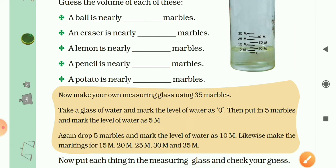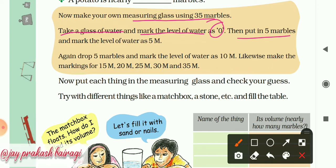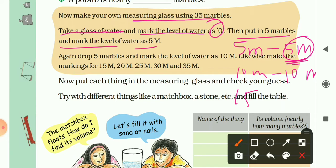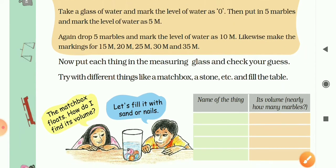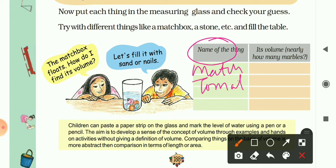A potato is about ten marbles - these are just guesses, answers may vary. Now make your own measuring glass using 35 marbles: take a glass of water and mark the level as zero, then put in five marbles and mark the level as '5m'. Similarly, mark levels at 10, 15, 20, 30, and 35 marbles. For an activity, collect things like a matchbox, marbles, tomatoes, and find each object's volume in marbles - for example, a matchbox is about four to five marbles, a tomato is about seven marbles.